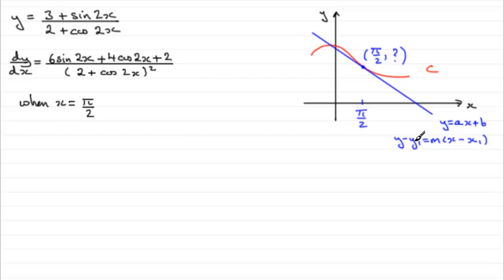This y1 value when x is π/2. So I'd write when x is π/2, and substitute this into here. So we would therefore have that y equals 3 plus sin(2 × π/2). And if you did 2 times π/2, you're going to just get π. And that's going to be divided by 2 plus cos of 2x. Two lots of π/2 is also going to be π.